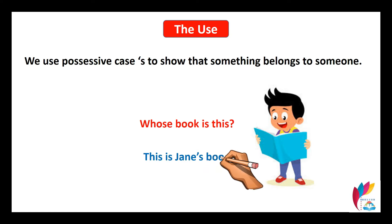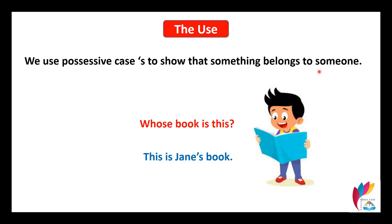For example, whose book is this? This is James's book. So this is James and this is the book. Whose book is this? This is James's book. The book belongs to James.